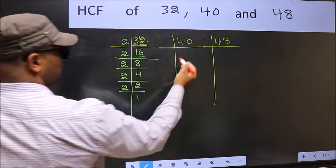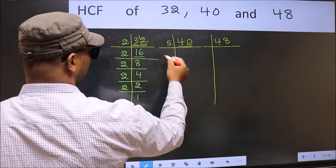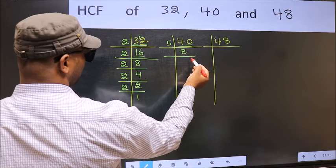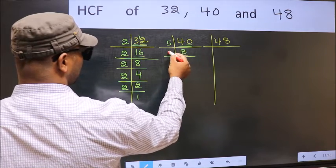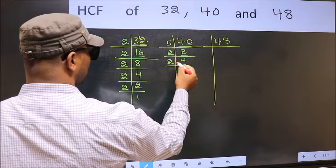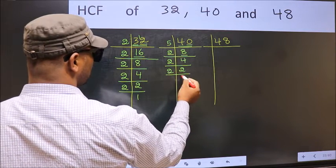Now the other number, 40. Last digit 0, so take 5. When do we get 40 in 5 table? 5, 8 is 40. Now 8 is 2, 4 is 8. Now 4 is 2, 2 is 4. Now 2, 2 is a prime number, so 2, 1 is 2.